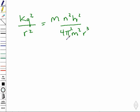Rearranging this expression so that r is by itself, we find that r is equal to h squared, n squared, over 4 pi squared, k, m, q squared.